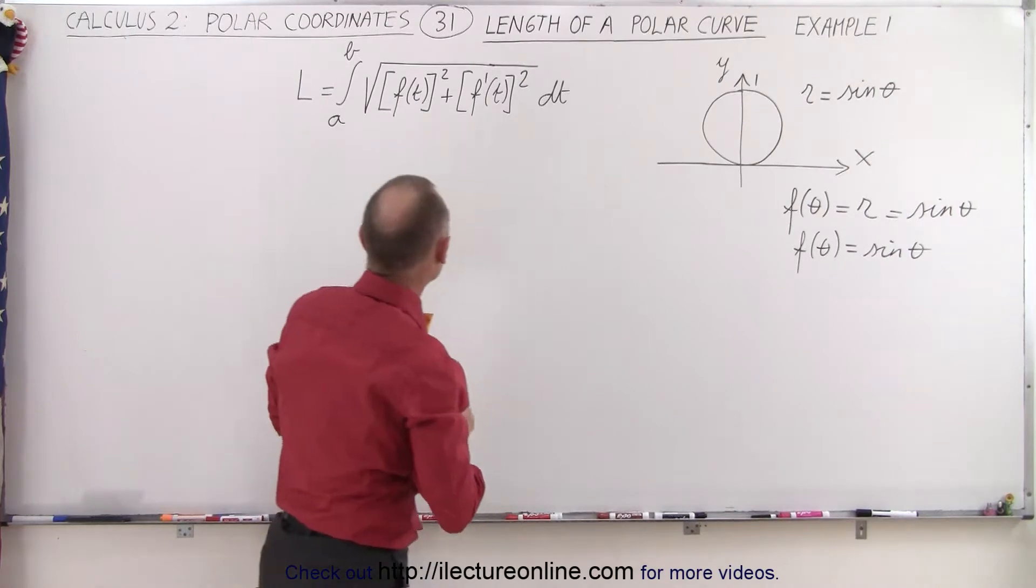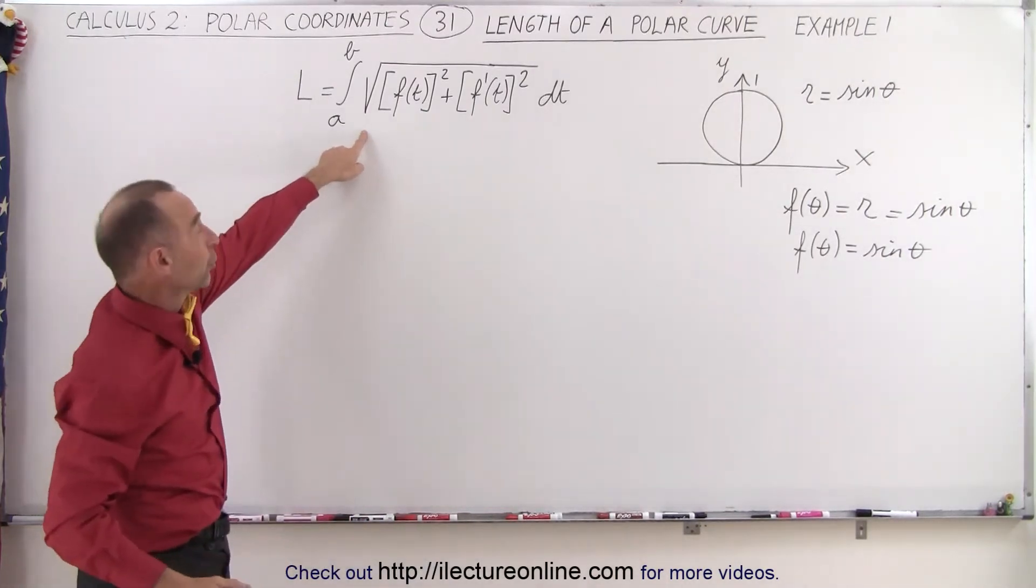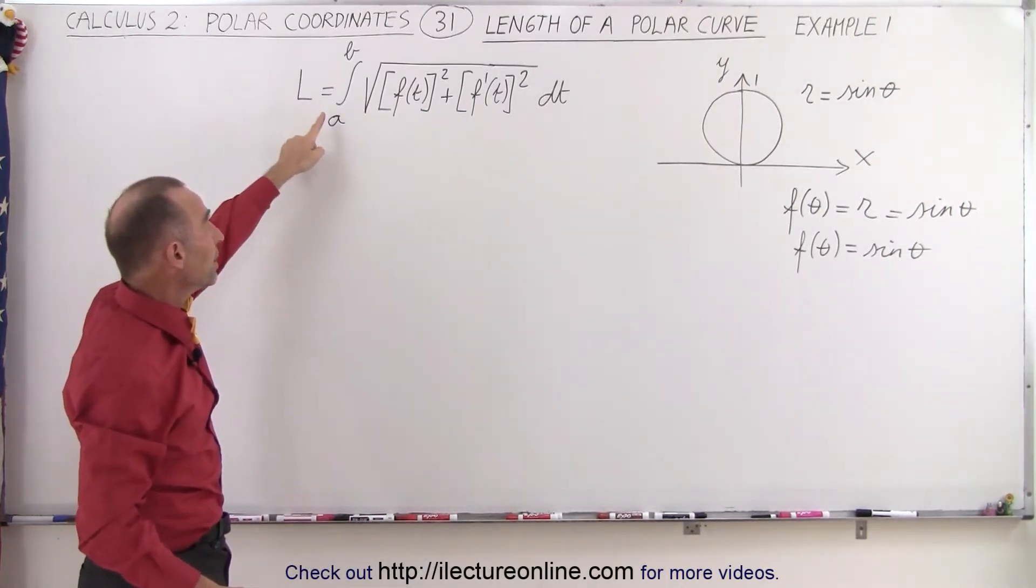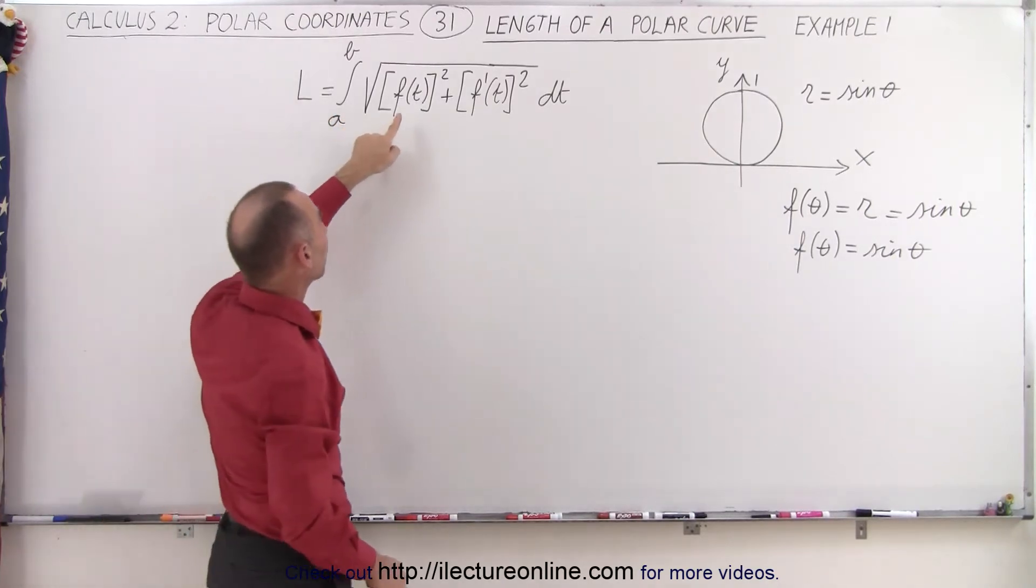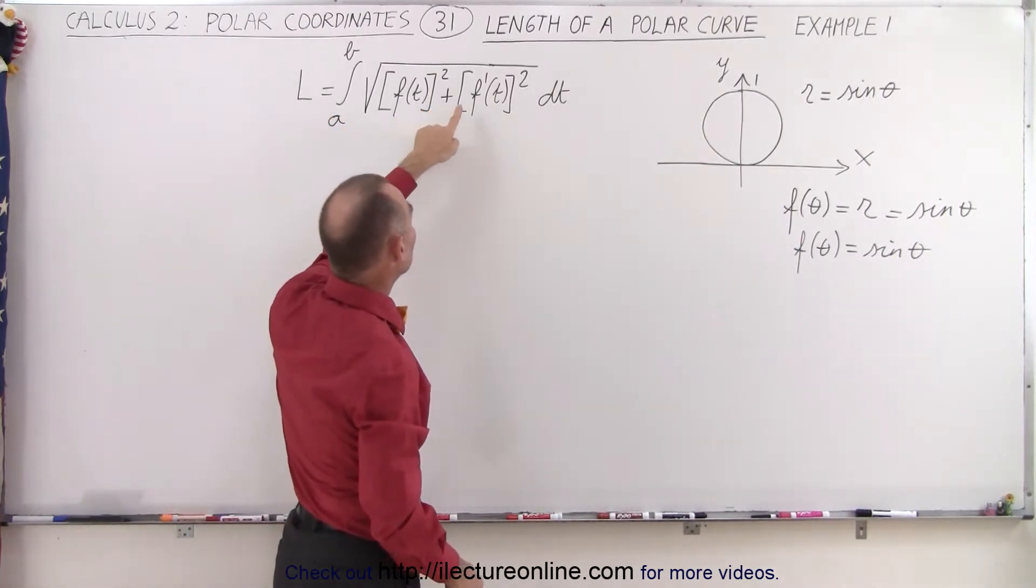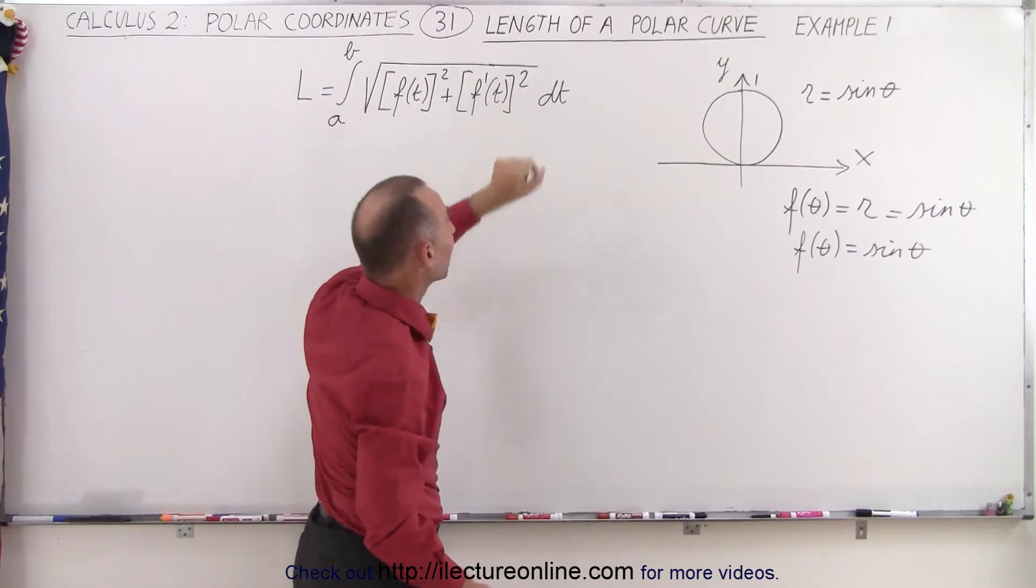Now going back to the general equation to find the length of a polar curve, it's equal to the integral from a to b of the square root of the function of t squared plus the derivative of the function of t squared times dt.